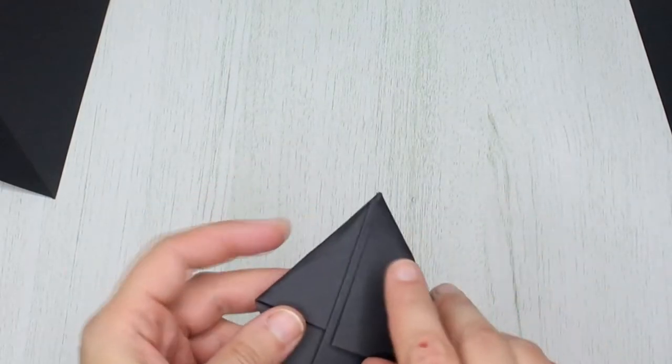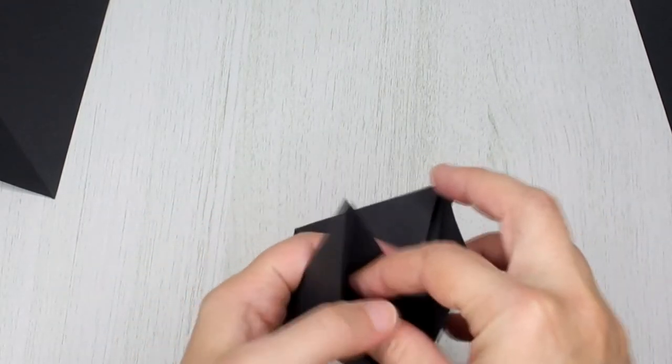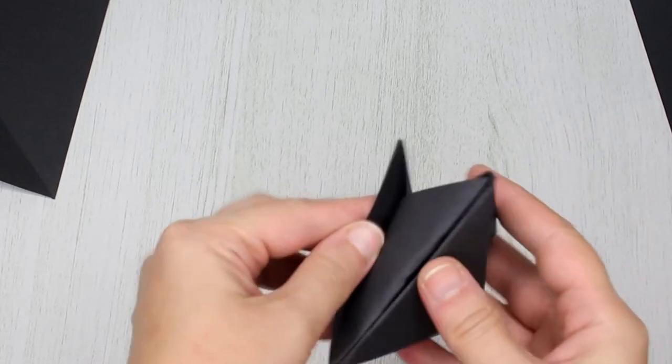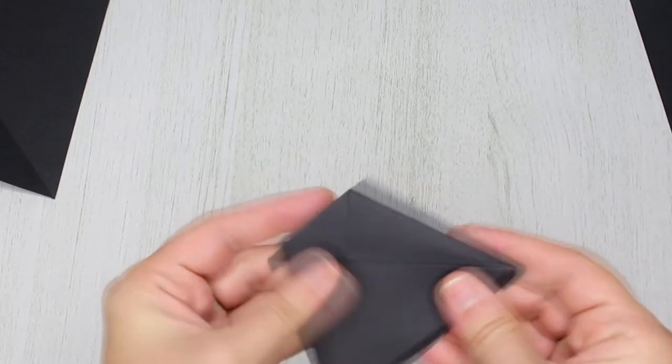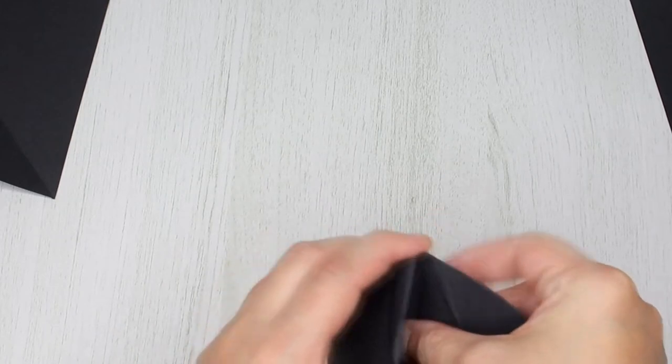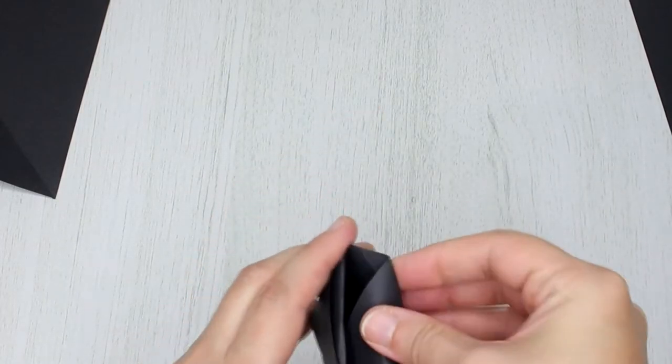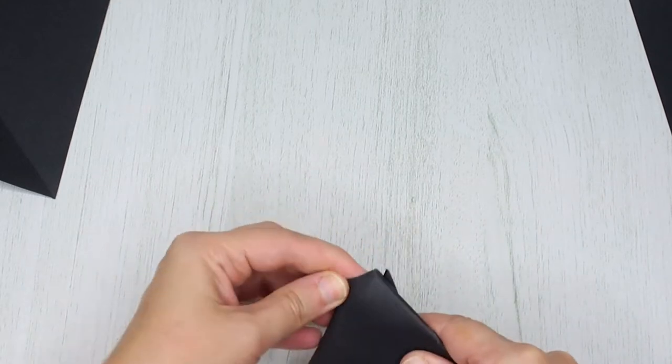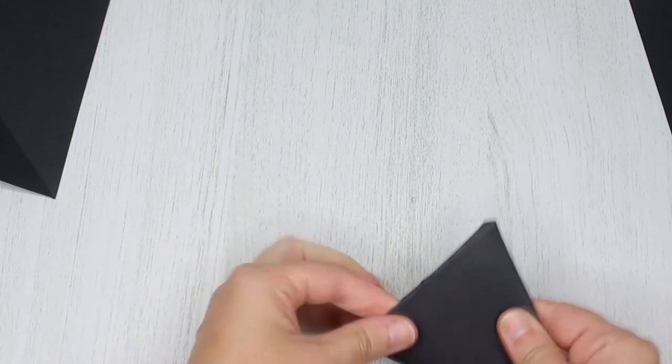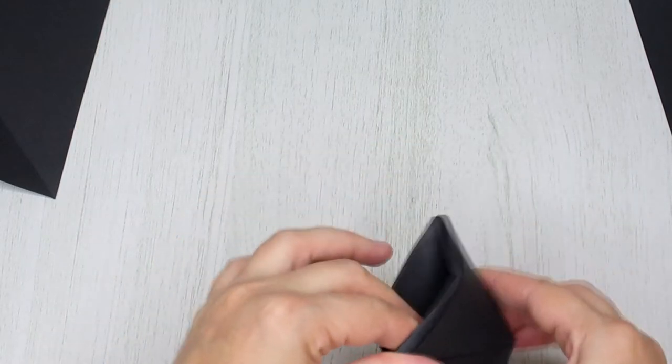Next you need to fold the top flaps and you're done. Tuck one of the flaps inside the folds and the other inside the cone. And this will be the base of your paper animal.